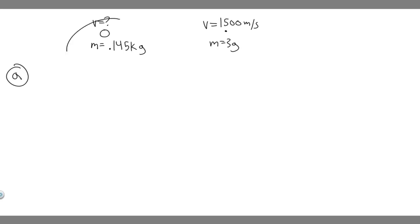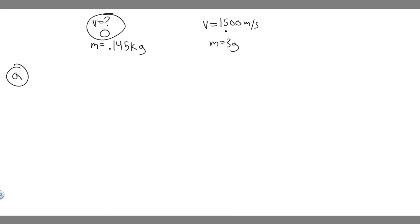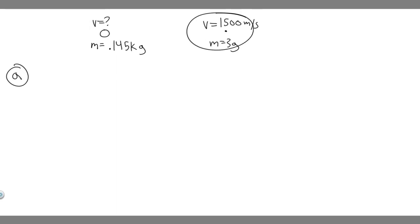So imagine this is our ball. We know its mass is 0.145 kilograms, and we don't know what its speed is — that's what we're trying to solve for if their momentum is equal. And we know this is the bullet, with mass 3 grams, and its velocity is 1,500 meters per second, which is 1.5 × 10³.